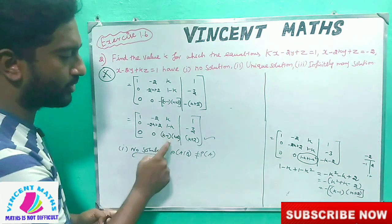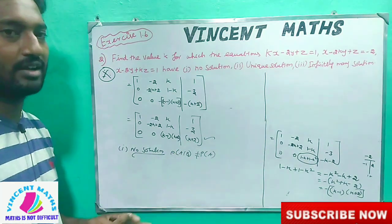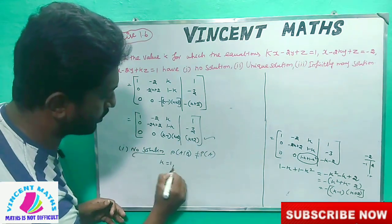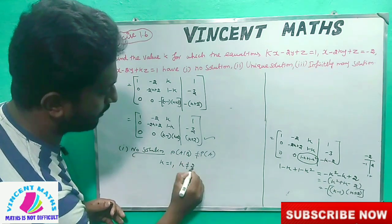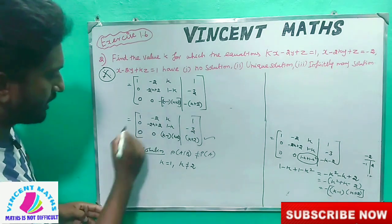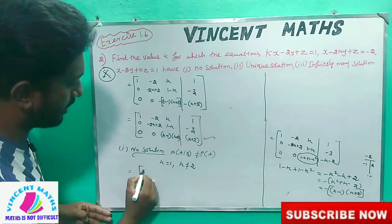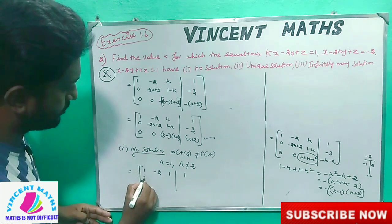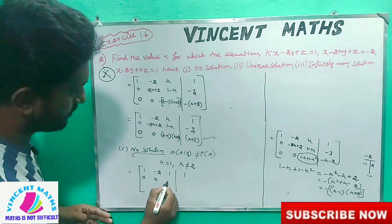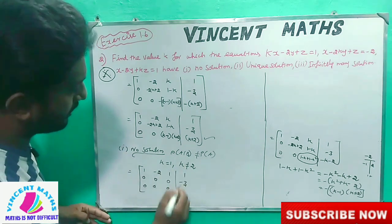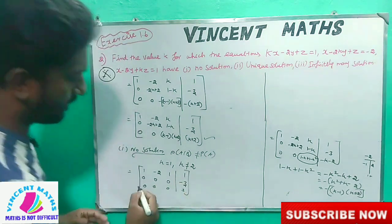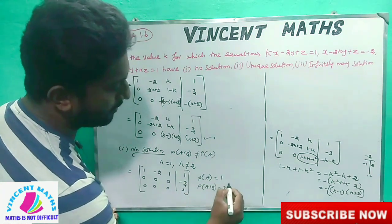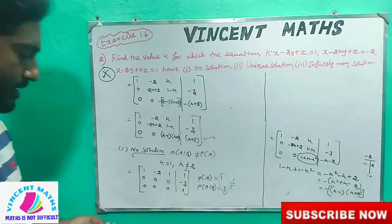Substituting k equal to 1: we get 1, 1, minus 2, 1, 1, 1, and the bottom rows become 0, 0, 0 — except the last entry is 3. Okay, see what we do now — rank of [A|b] equals 3, which is not equal to rank of A equals 2. That's why there is no solution when k equals 1.